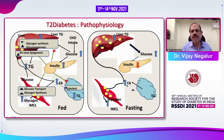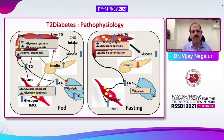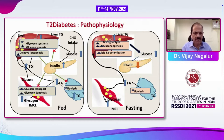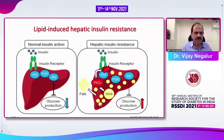In the fasting state, the reverse occurs: there's increased gluconeogenesis, increased glycogenolysis, increased lipid re-esterification, lipolysis continues, and this fat can be used as a source of energy for the muscle.